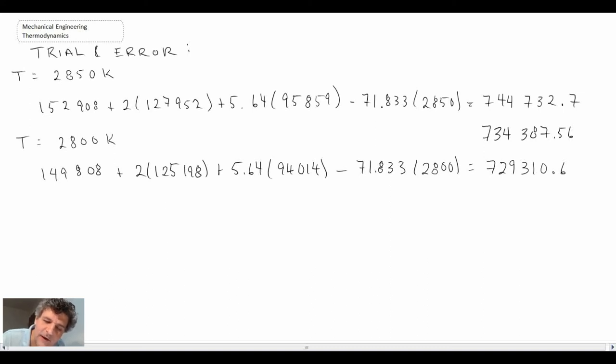we see that on this side, we are above, and on this side, we are below. So that means that our final temperature is going to be somewhere between 2850 and 2800.